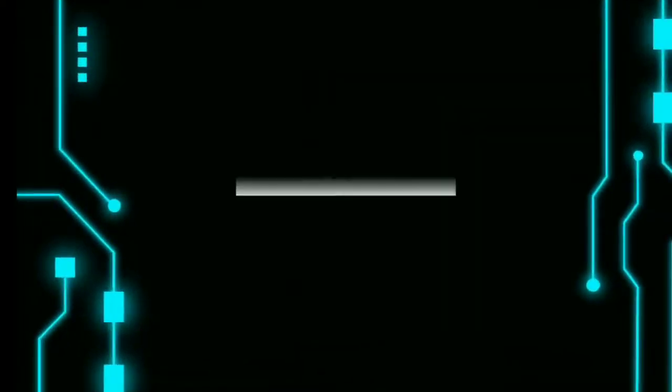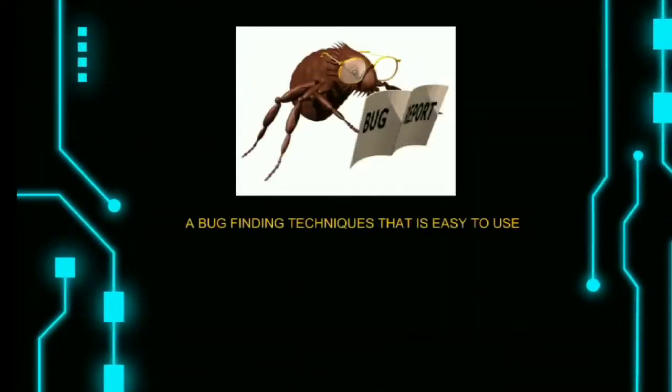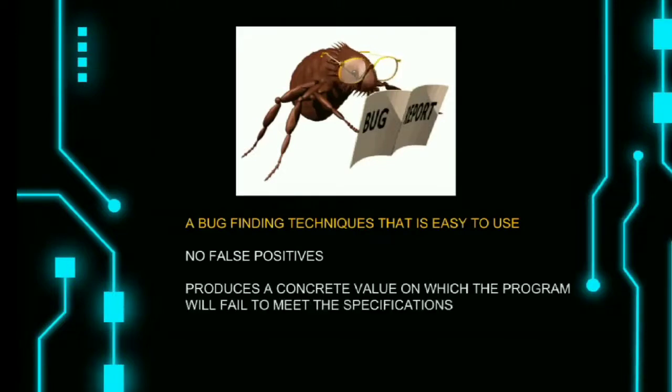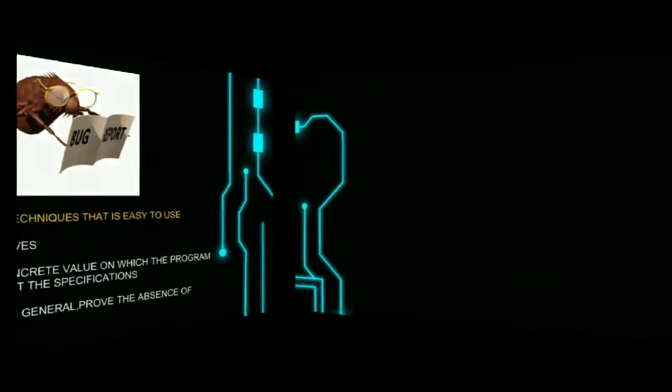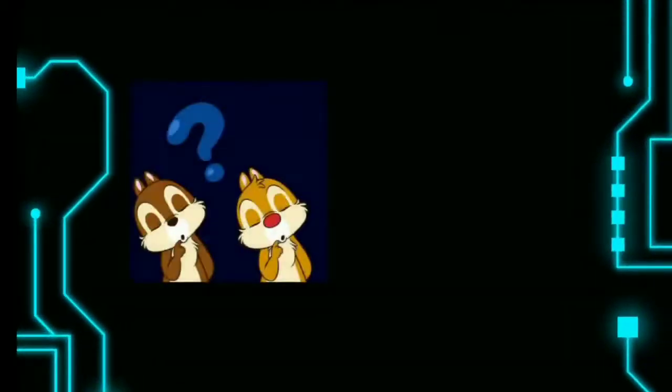What is symbolic execution? A bug finding technique that is easy to use, with no false positives. It produces a concrete input on which the program will fail to meet the specification, but it cannot, in general, prove the absence of errors.